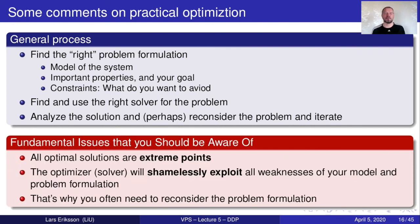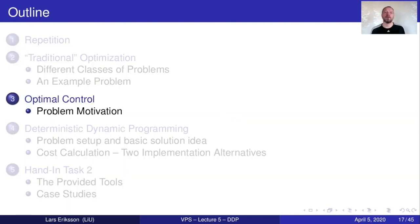Some fundamental issues that I want you to be aware of. All optimal solutions are extreme points. Extreme in this sense can be that they are exhibiting the best possible behavior that sits perhaps at corners of the allowable space. And another thing that's very important to also be aware of is that the optimizer, the solver, will always shamelessly exploit all weaknesses that you have in your model and your problem formulation. If you have left an open space for the optimizer where it can improve the performance, then it will inevitably go there. That's why you often need to reconsider the problem formulation. So you iterate over this cycle to find a good solution to your problem. With that, I think it's a good opportunity now to take a first break.